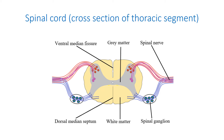Caudally, its slightly flattened cylindrical body ends at the conus medullaris, whose tip extends to the sacrum as filum terminale. The spinal cord has a segmental structure, being divided into 31 segments, each of which connects to ventral and dorsal roots.